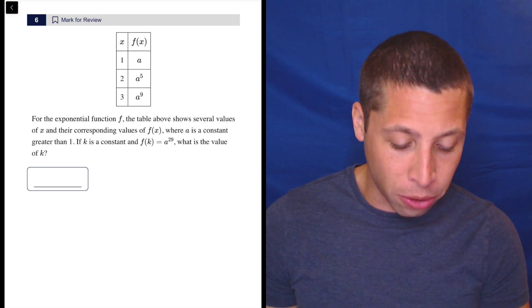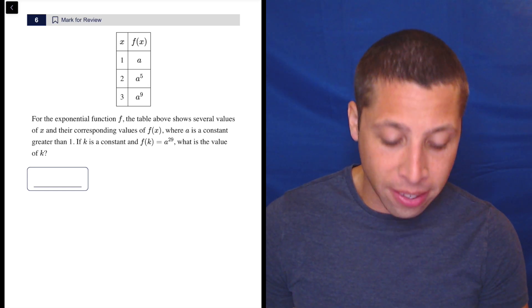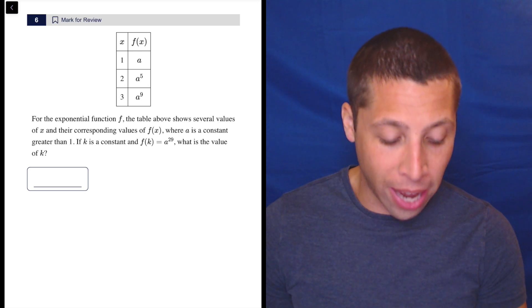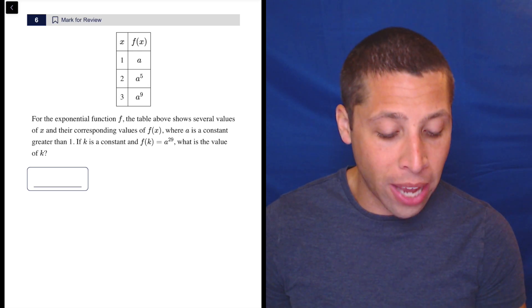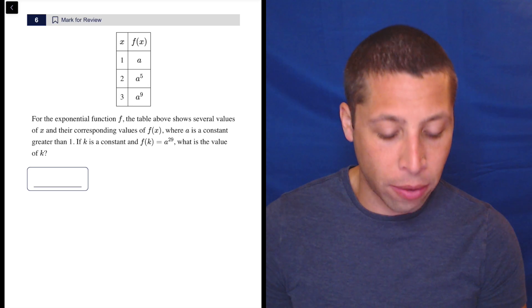For the exponential function f, the table above shows several values of x and their corresponding values of f of x, where a is a constant greater than 1. If k is a constant and f of k equals a to the 29th, what is the value of k?